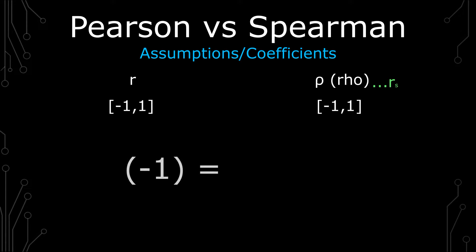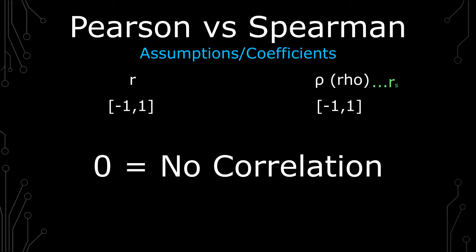Negative one meaning they have an inverse relationship, that is to say, as one increases, the other decreases. And positive one being as one increases, the other variable also increases. And lastly, zero just means there's no correlation.